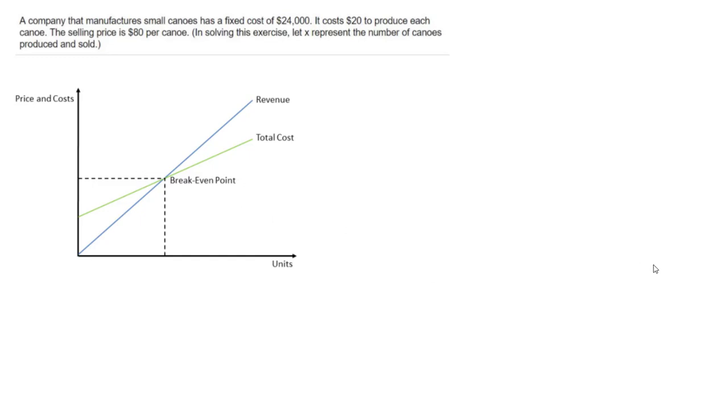So we're selling some canoes here. They have a fixed cost, so remember fixed cost means you have to pay for that no matter how many canoes you sell, of $24,000, and then it costs $20 to produce each canoe.